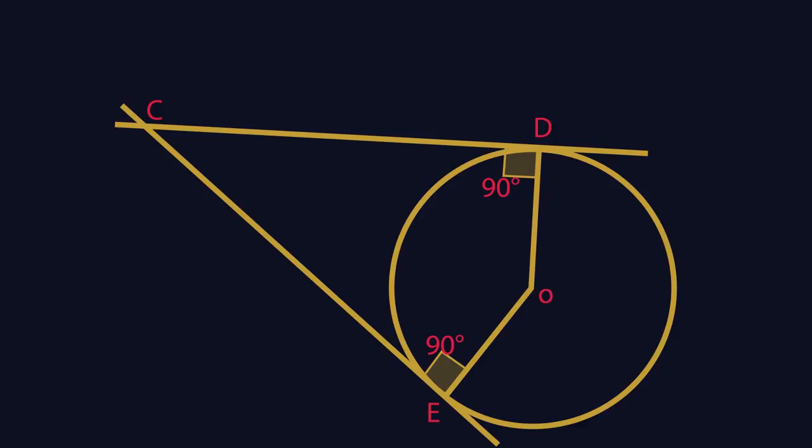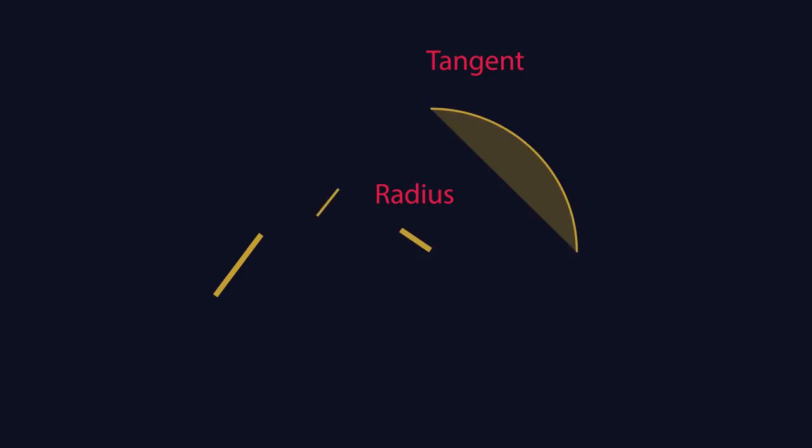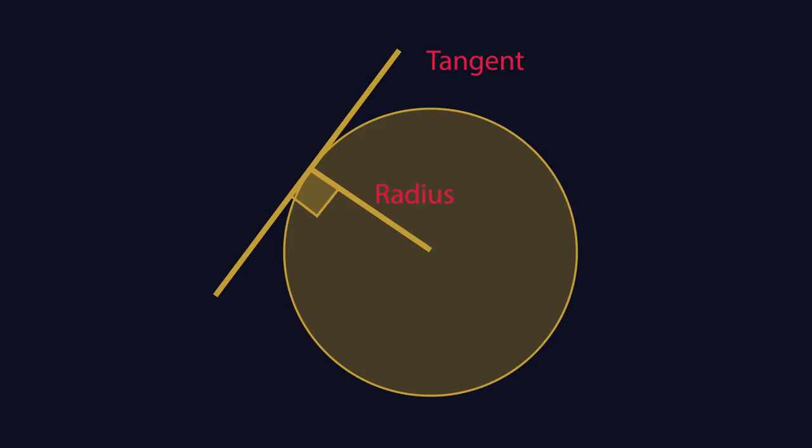So that's theorem five. The angle between a tangent and a radius is 90 degrees.